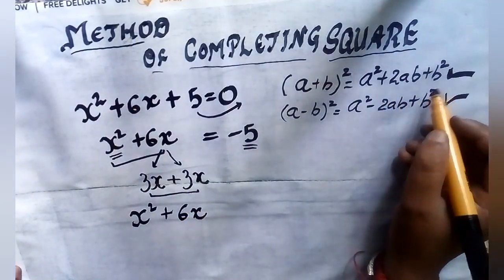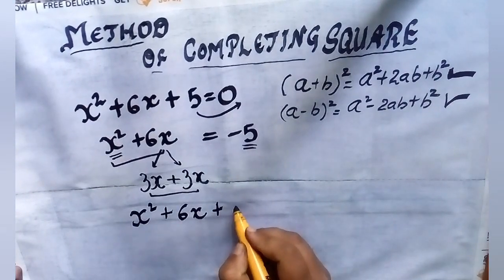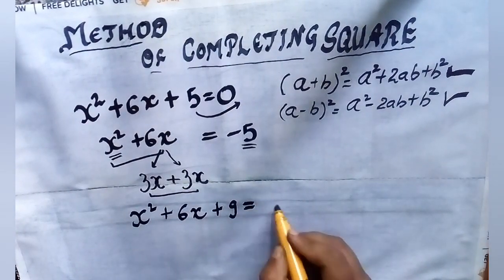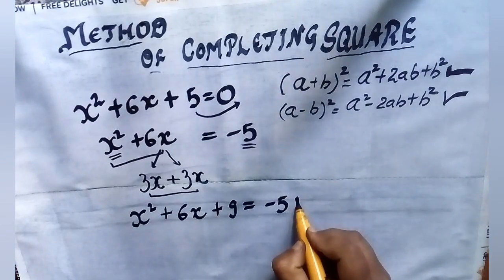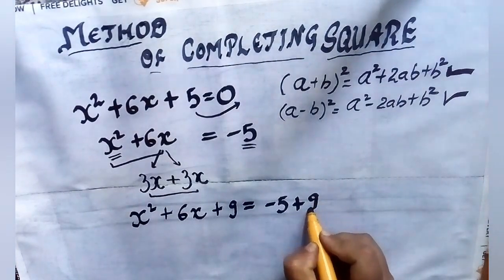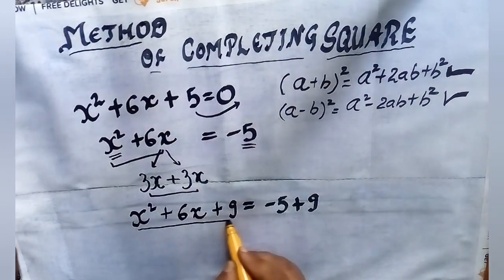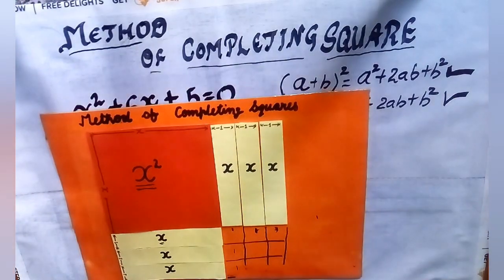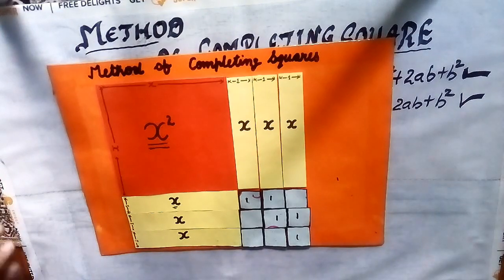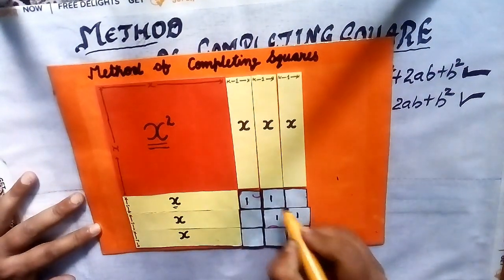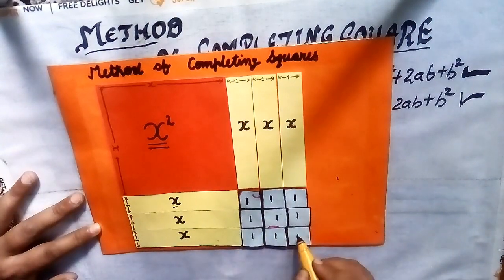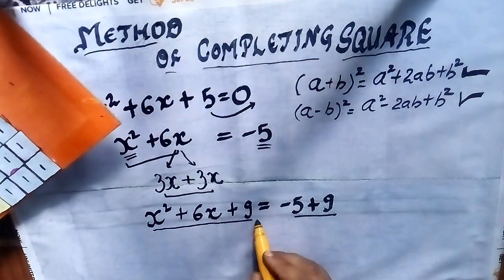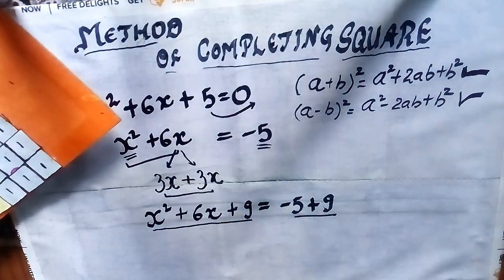The equation will become x² + 6x + 3² = -5 + 9. Now what will happen by adding this 9 to both sides? You can see from the figure that when I added a square with side 3 units, our square is complete. The area of the square which I added is 9 square units. Remember, we are adding this 9 to both sides of our equation.